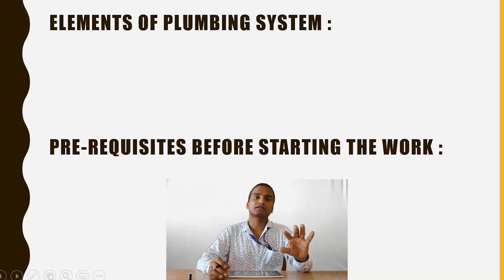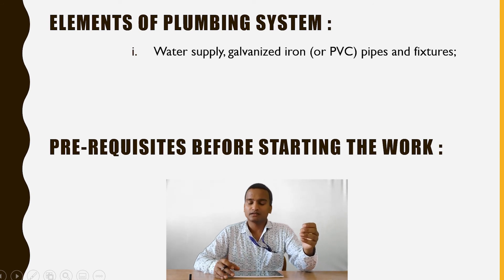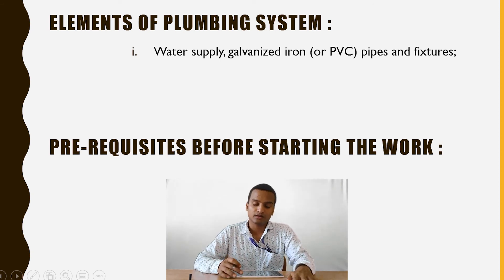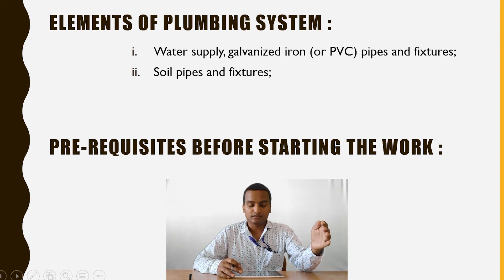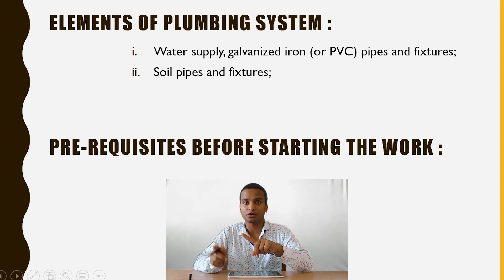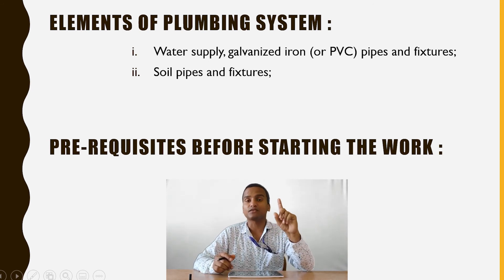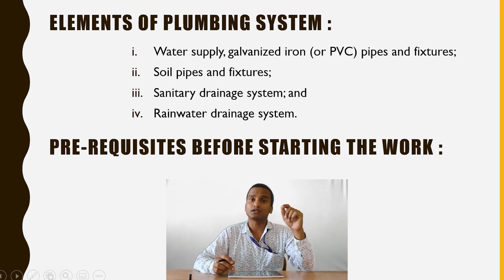Let us discuss the basic elements of a plumbing system. First there are pipes, which can be of different materials like galvanized iron, CI, prestressed and many others — which we will discuss in a separate class. Then come soil pipes and fixtures. These pipes are different from water supply pipes. There are two kinds of pipes: water supply pipes that carry potable water, and soil pipes that carry wastewater for sanitation. Then comes the sanitary drainage system and also the rainwater drainage system.